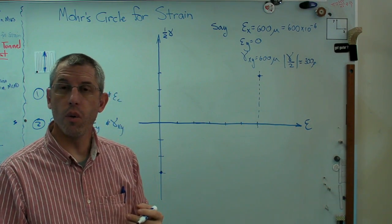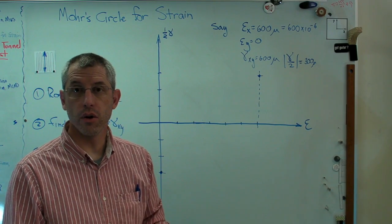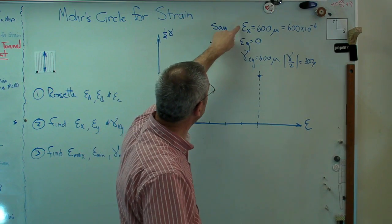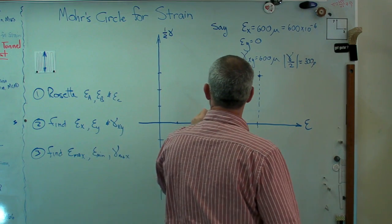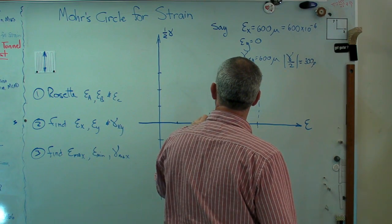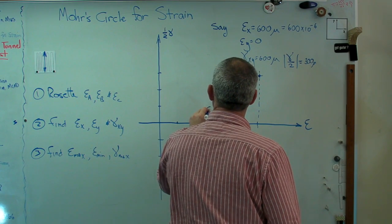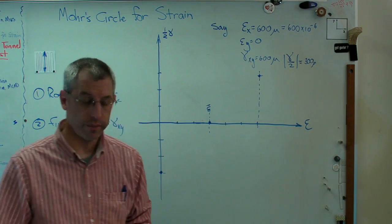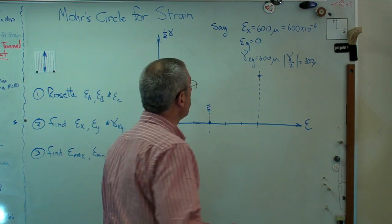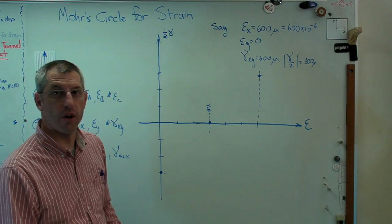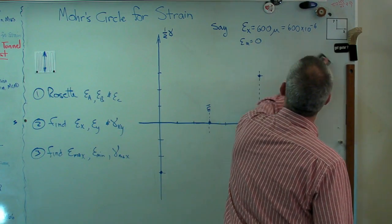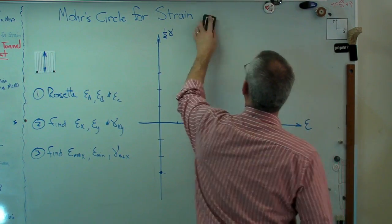Now, I need to know what the mean normal strain is. It's going to be epsilon x plus epsilon y over 2. That's going to be 300. So I'll call that epsilon bar. Now to draw this out, I'm going to need to erase some stuff. So if you need to do a screenshot of that, go ahead.